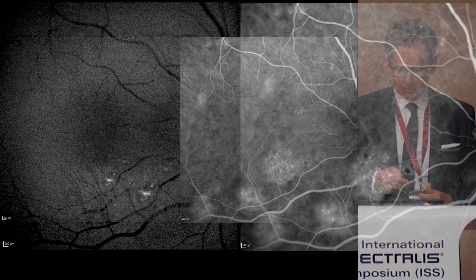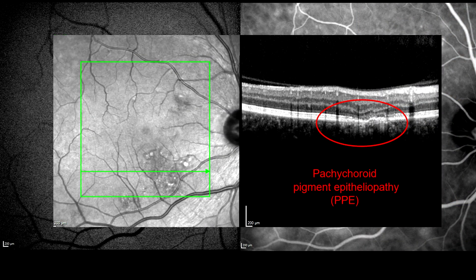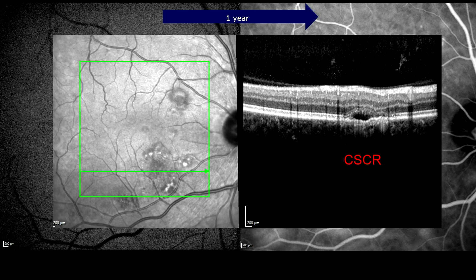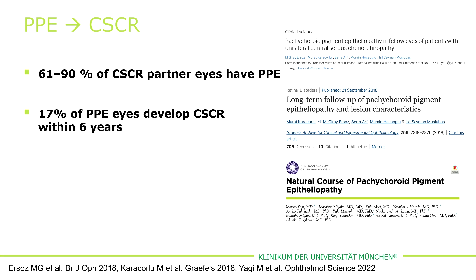Let's start with the transition from Pachychoroid pigment epitheliopathy to CSC. Here you can see the changes of Pachychoroid pigment epitheliopathy when the patient first presented. He came back one year later and subretinal fluid was present. It looks like there is a transition, and we now know that 61 to 90% of patients with central serous choroidopathy have RPE changes in the fellow eye, and about 17% of patients with Pachychoroid pigment epitheliopathy develop central serous choroidopathy within six years.